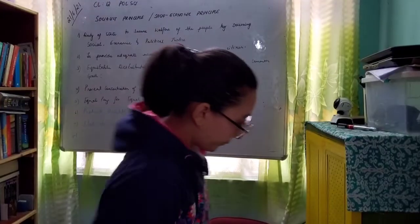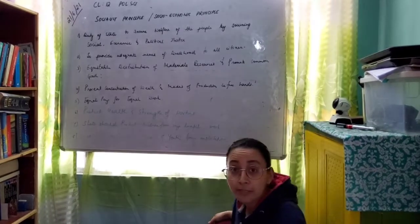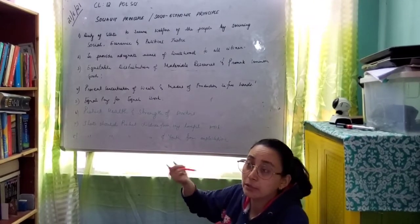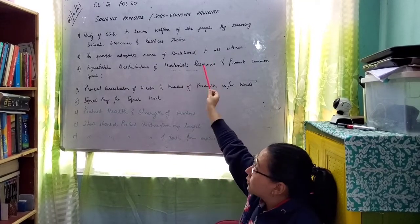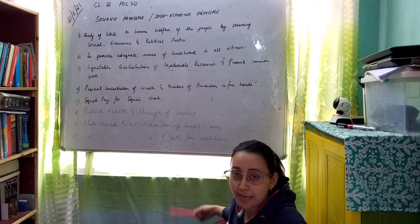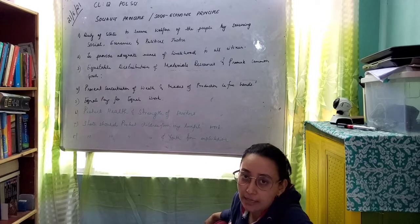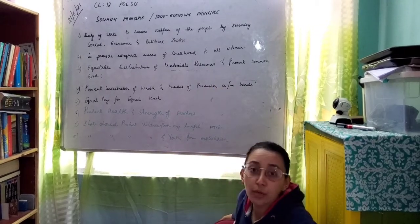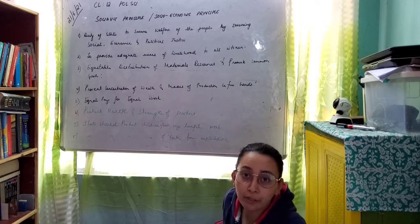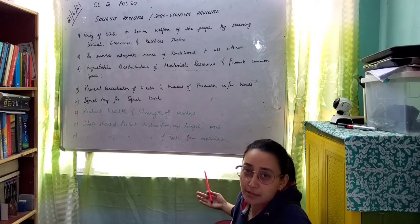Under this principle, that is the Socialist Principle — also called the Socio-Economic Principle, as these two terms can be used interchangeably — there are around ten principles. In your examination you can explain any six or eight of the most important ones. These are in your book; in my book the page number is 422. Let's discuss these principles one by one.